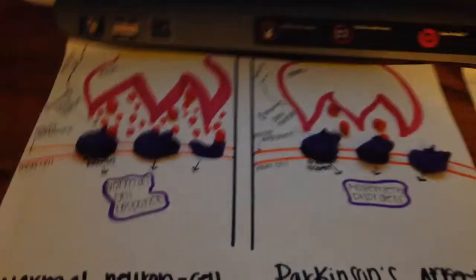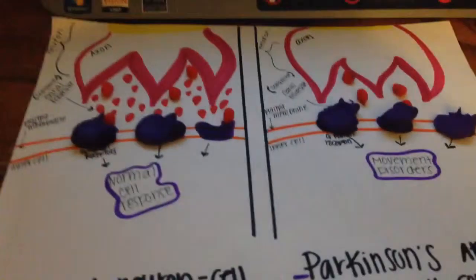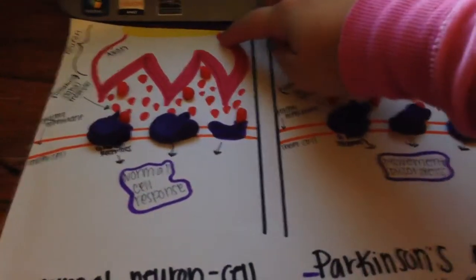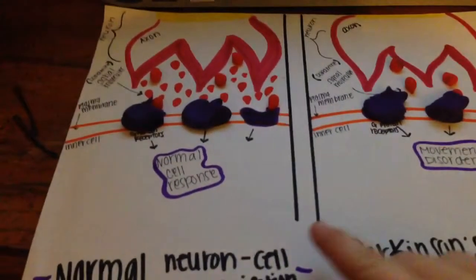So basically, right here, this is going to be our axon of your neurotransmitter. This is going to be the end where the signal is going to come through, and this is going to be our cell.